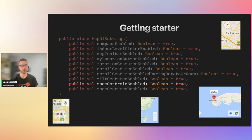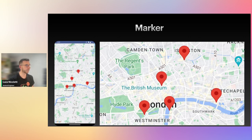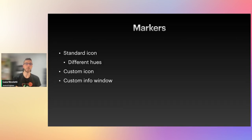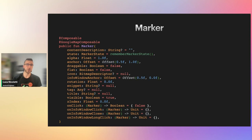But that's just the customization of the map, not really drawing on it. One of the ways to draw something on the map is placing markers and clusters. Those are the default markers placed on the map. We can use the standard icon, the standard icon with different hues, a completely custom icon, or specify a custom info window.